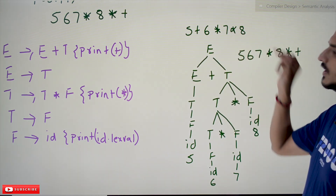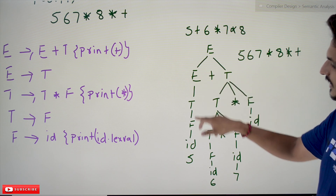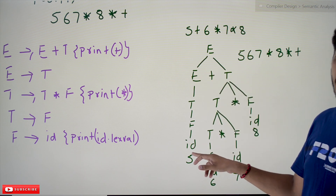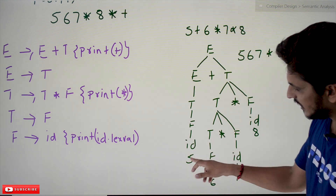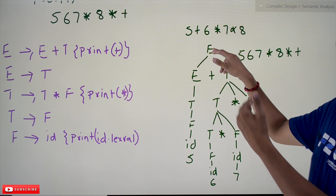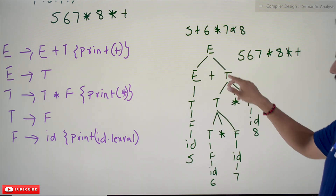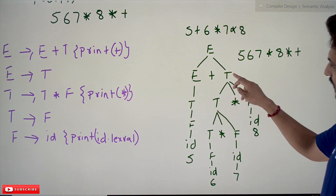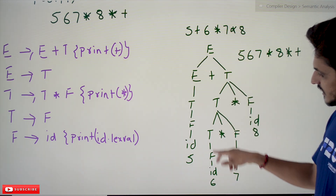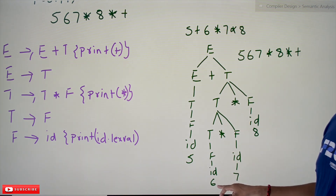Let's see how it evaluates 5 plus 6 multiplied by 7 multiplied by 8. E → E plus T, and E evaluates to T, T evaluates to F, and F evaluates to id. Whenever it sees id in a top-down approach, it displays the lexical value — so 5 will be displayed. Then it goes to evaluate T → T star F, T → T star F, T → F.